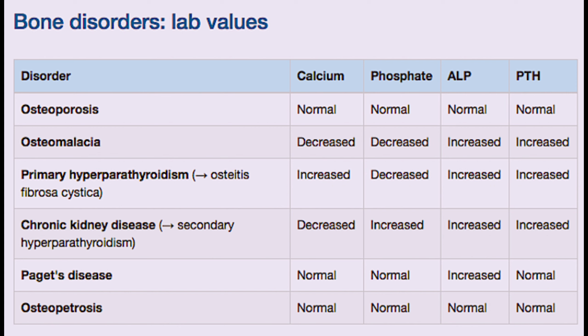Lab values to differentiate: in osteoporosis, calcium, phosphate, and ALP are all normal. If ALP is raised but calcium and phosphate are normal, this is Paget's disease. If calcium and phosphate are low and ALP is high, this is osteomalacia.